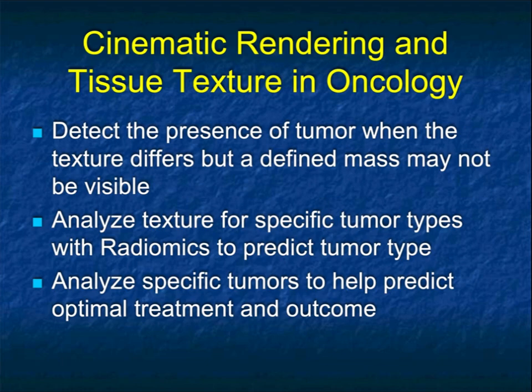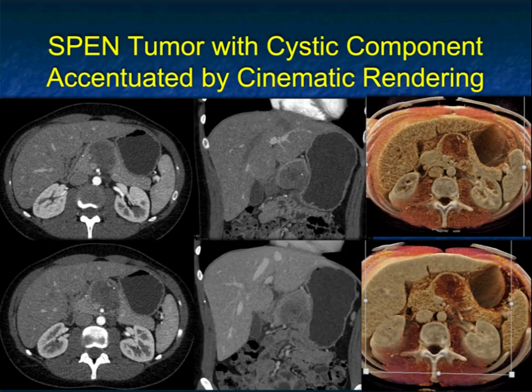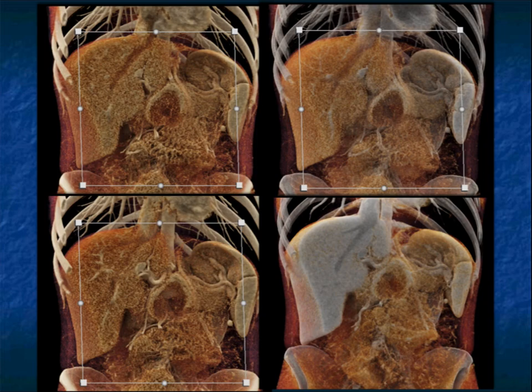Going back to cinematic rendering — I spoke about texture mapping, which may be ideal for detecting the presence of tumor where the texture differs but the mass may not be defined. Early pancreatic cancer is a good example. We can analyze the texture for specific tumor types with radiomics to predict tumor types, predict outcomes, or predict response to chemotherapy. Here's a nice example of a SPEN tumor with a cystic component — you can see it on the axial views and coronals, but look how much more obvious it is on cinematic rendering. You also appreciate the cystic components better, which allowed us to make the diagnosis of a SPEN tumor. Here's a good example of four different renderings really accentuating the patient's tumor.